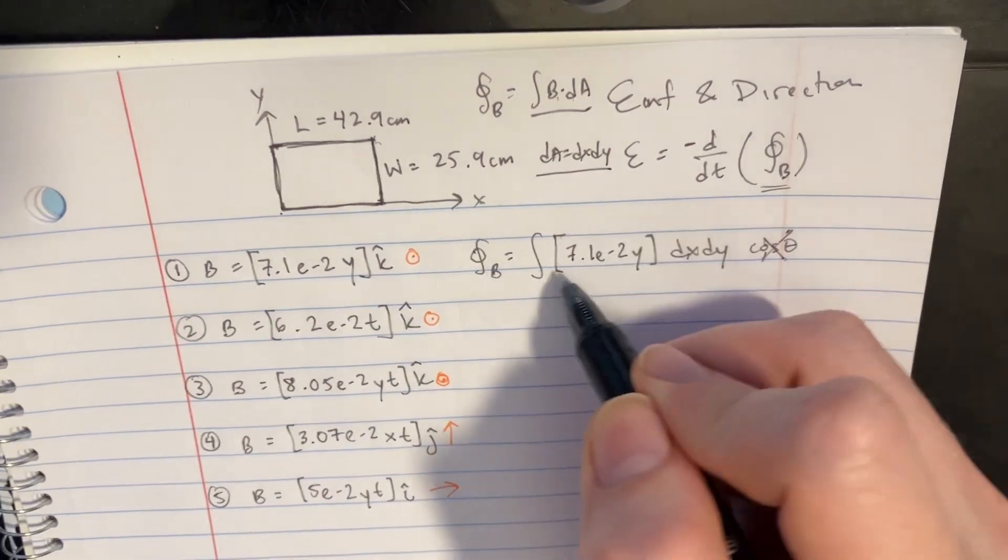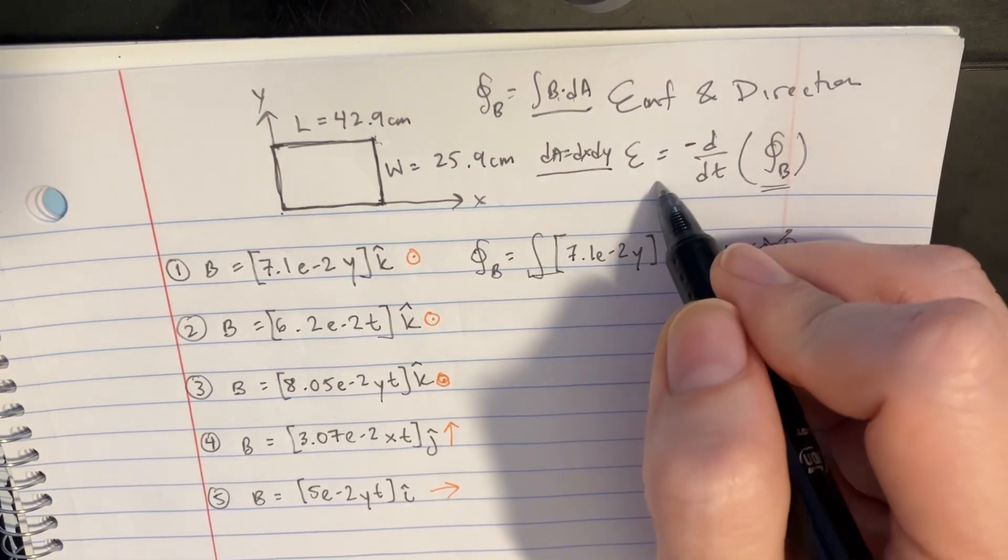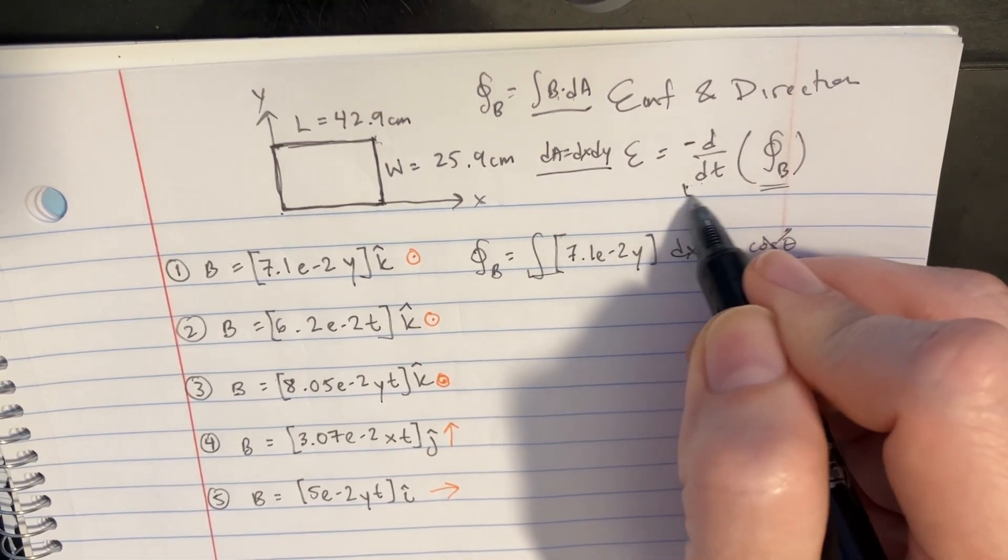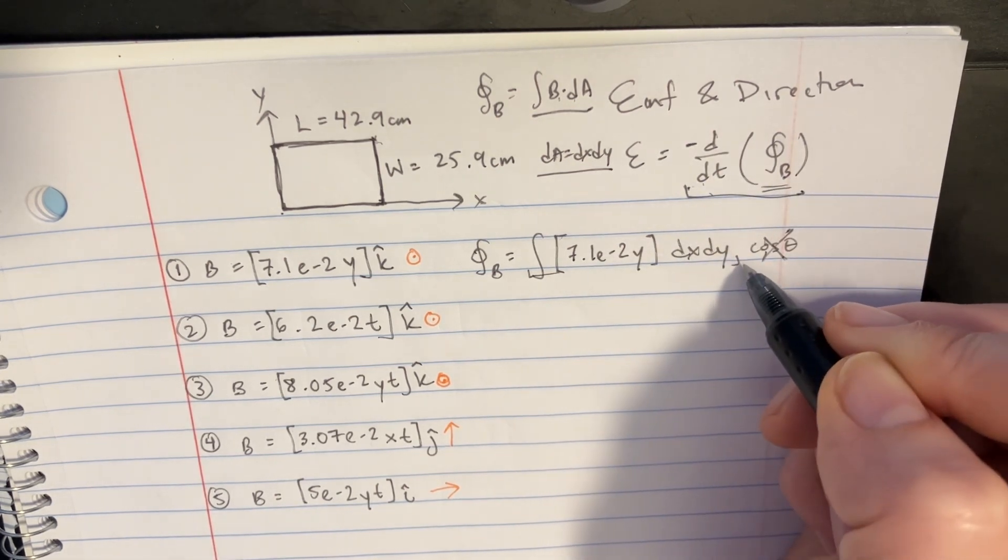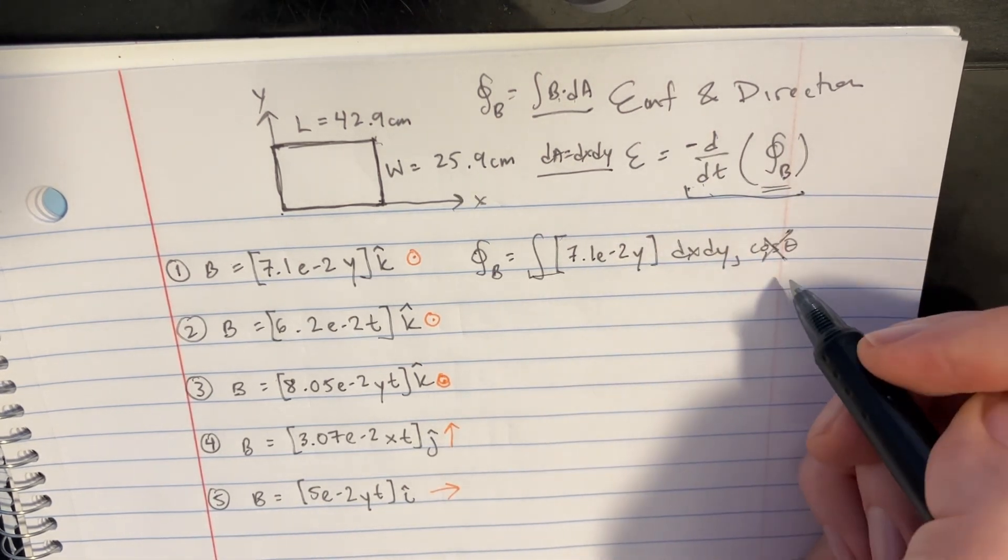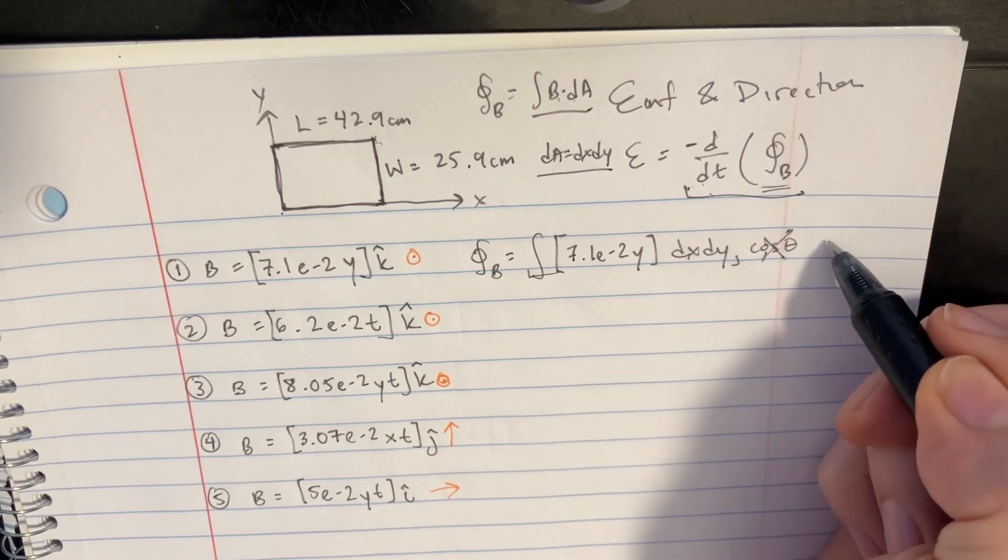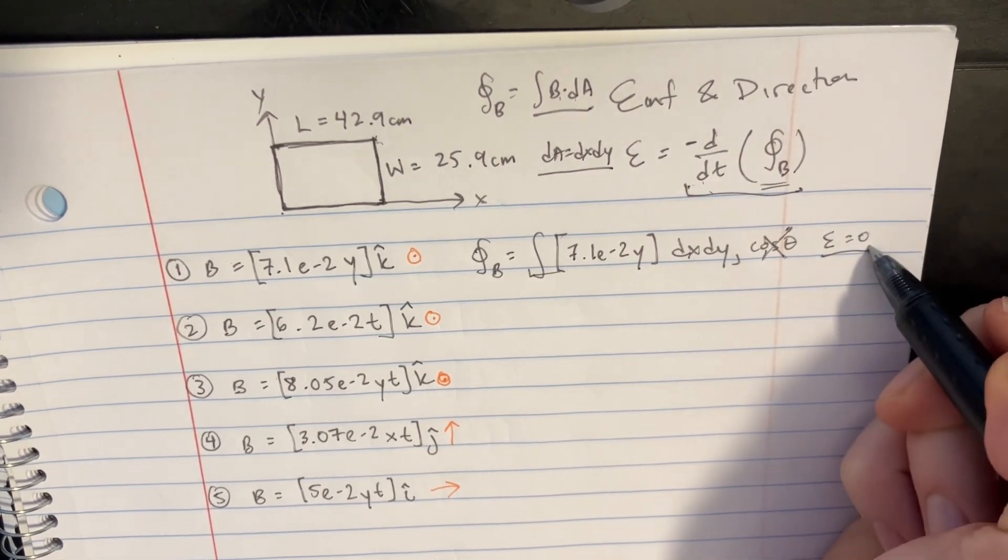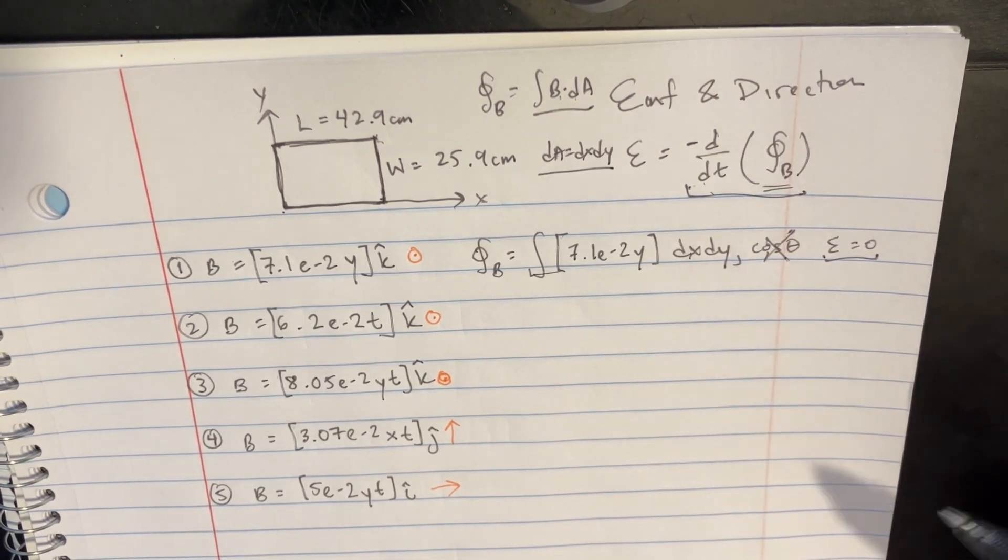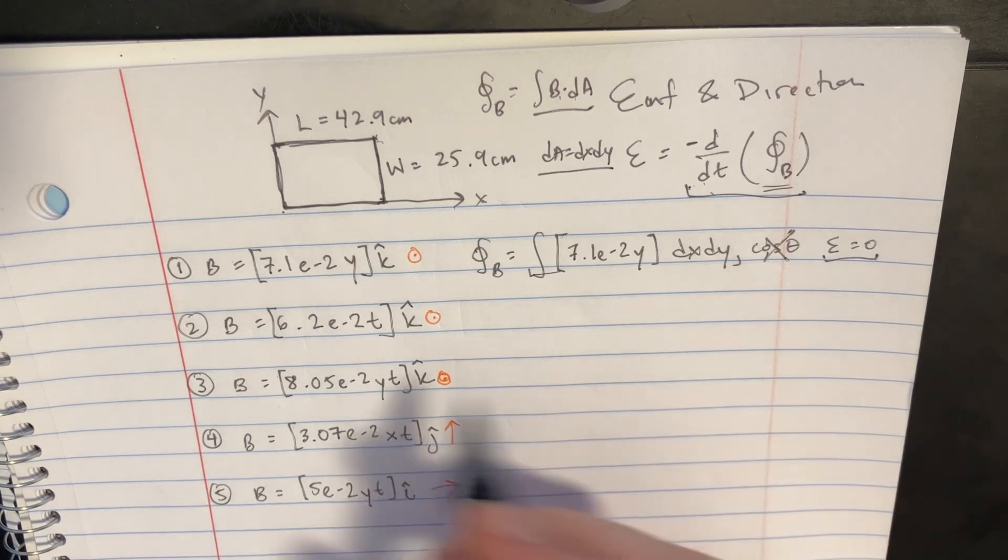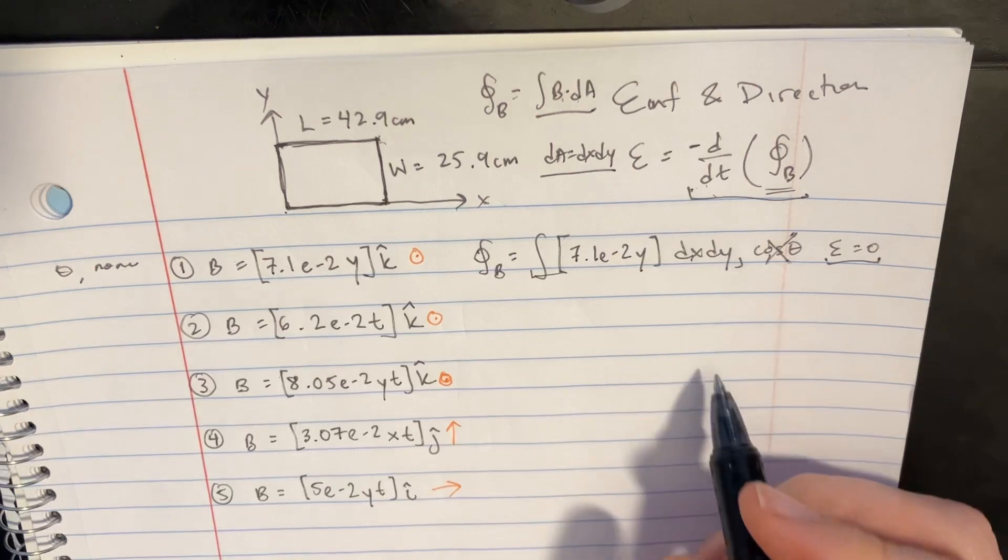But now we have this. The EMF is supposed to be the derivative, the time derivative of this. If we were to try to take the time derivative of that, there is no t. Therefore, the derivative would be 0. And therefore, in this case, the EMF would be 0 because there's no t's here. So we'll just take the derivative of that, and that would just be 0. So in the first one, it's 0, and the direction would be none.